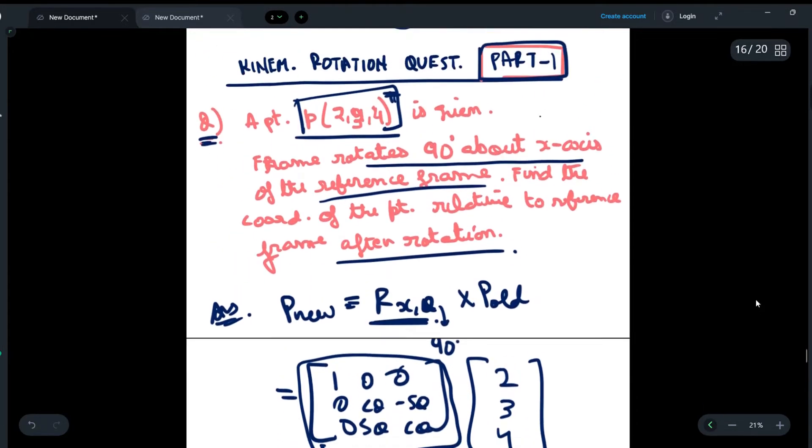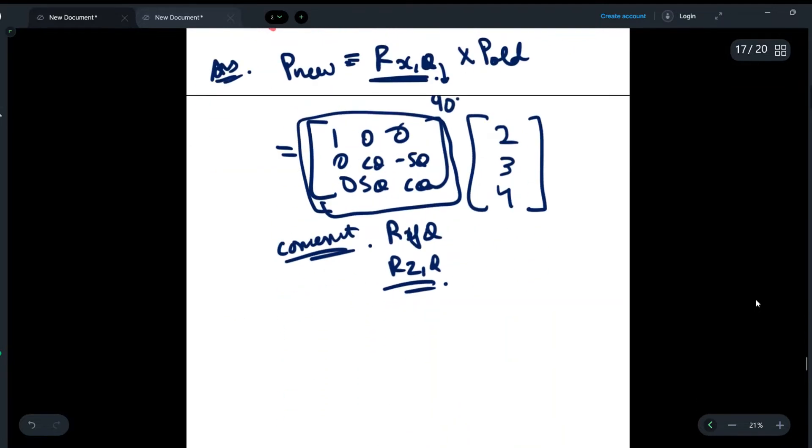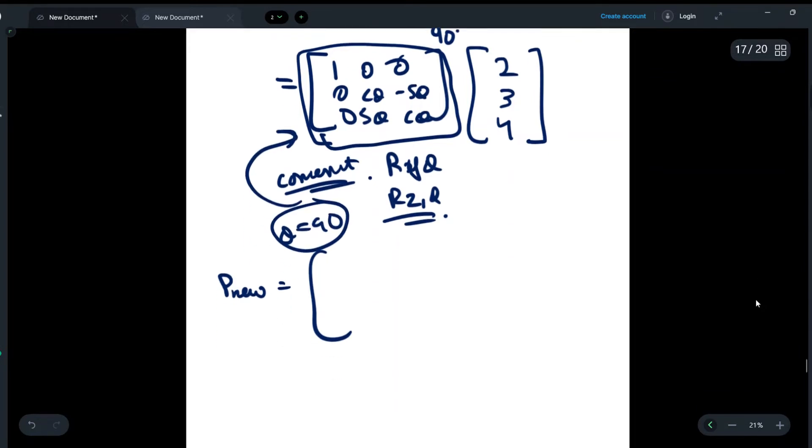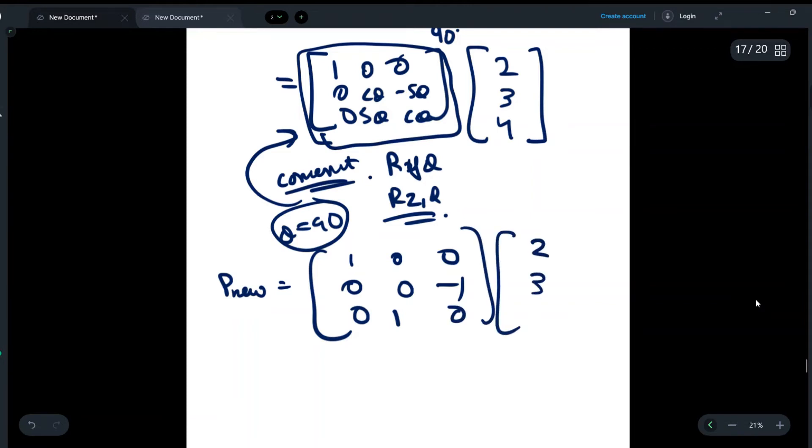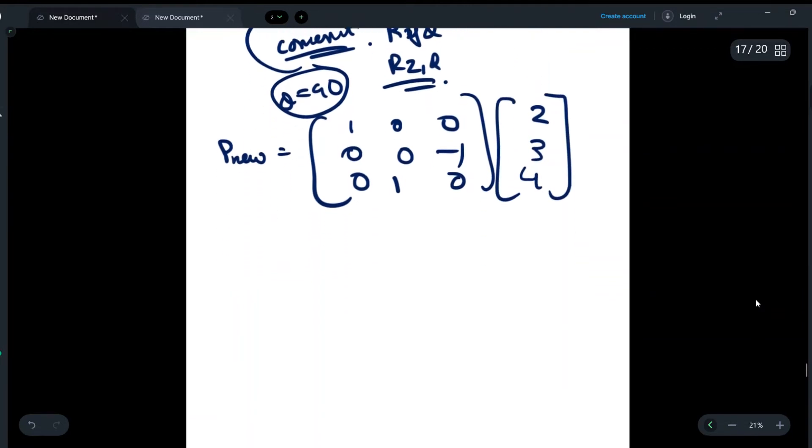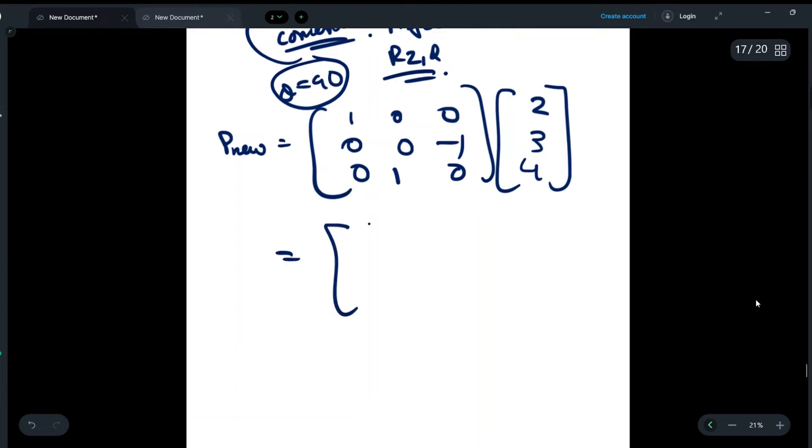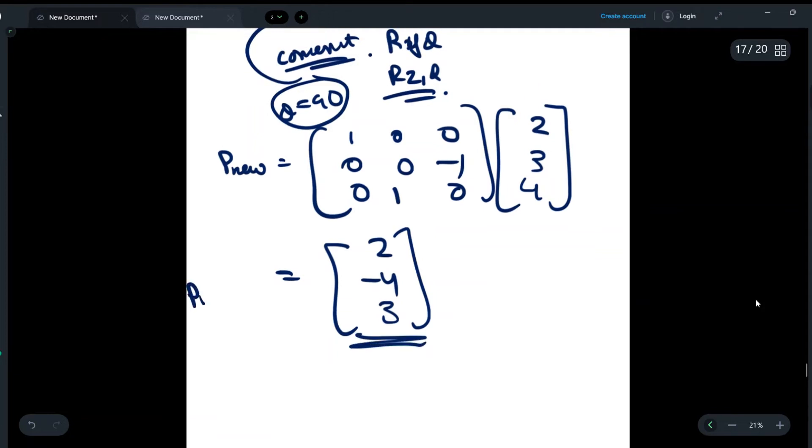In order to find P_new, we will put the value of theta as 90 degrees in the matrix. From there we will get the values as [1, 0, 0; 0, 0, -1; 0, 1, 0]. Now we will simply multiply this matrix by the value of P_old, and on doing so you will get [2, -4, 3]. So guys, this is your final answer for P_new—these are the new coordinates where point P will be located after rotation about the x-axis.